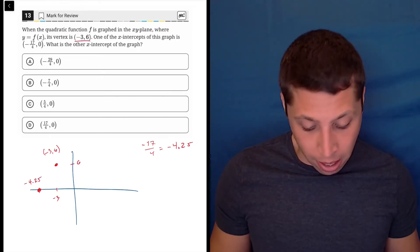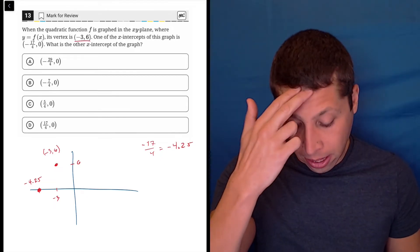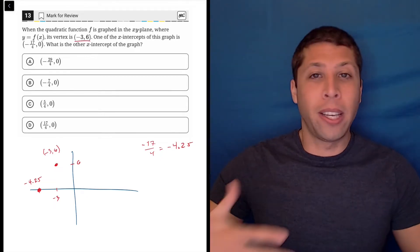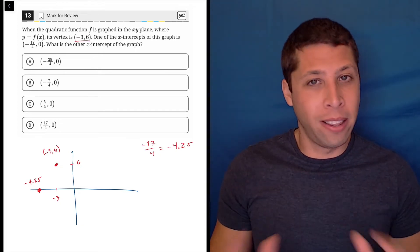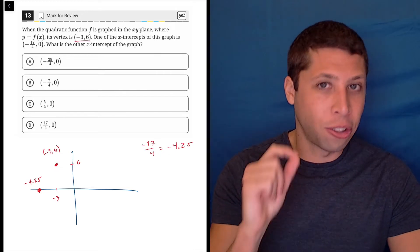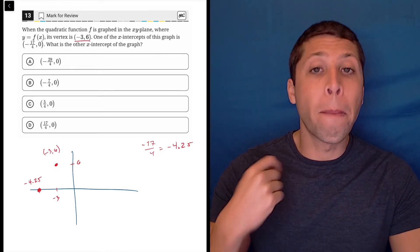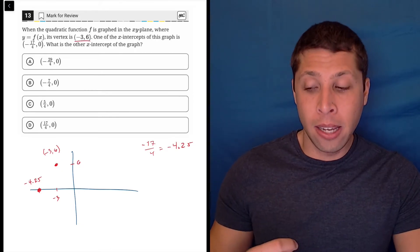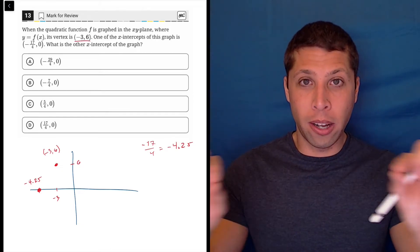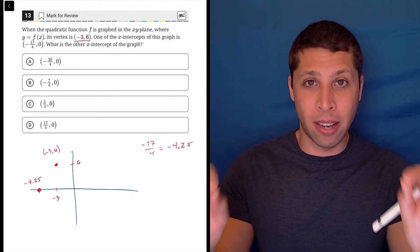I have a vertex, an intercept, an x-intercept. They want to know the other x-intercept. So there are ways to do this involving equations and formulas, but none of that is necessary because we know one essential fact about parabolas. They are symmetrical.